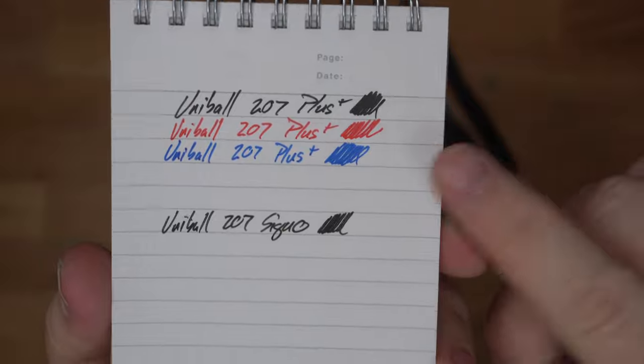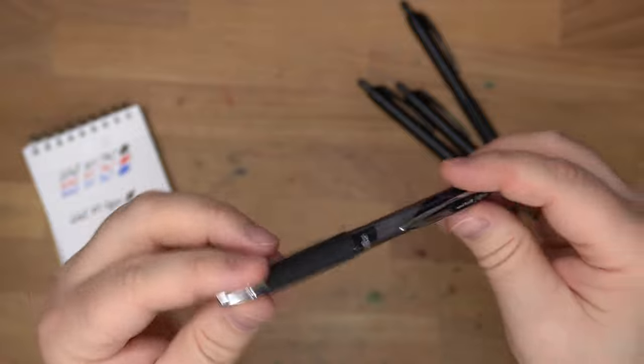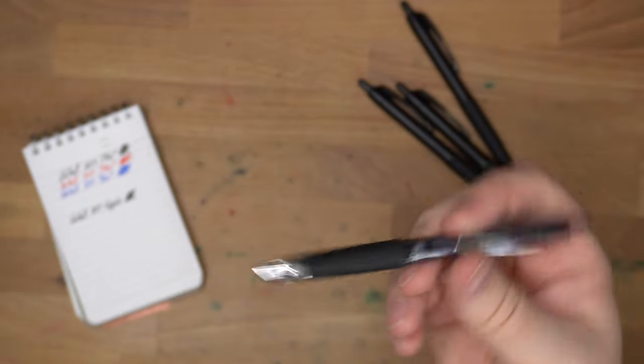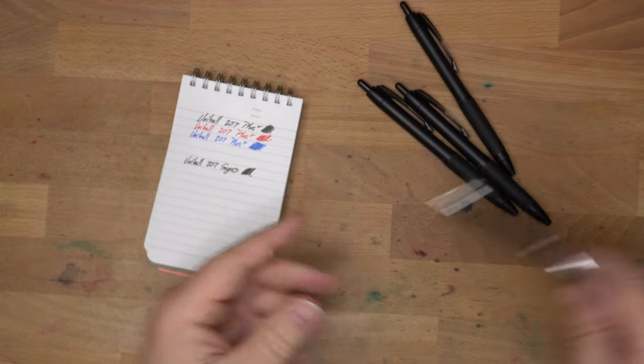Of course, these are brand new. And this one I've had for a while. I don't know, I've used up some of the ink in it anyway. But I have had a lot of these 207s over the years, and so there's no telling how old it is. So maybe that has something to do with it. Maybe the ink has aged a little bit.